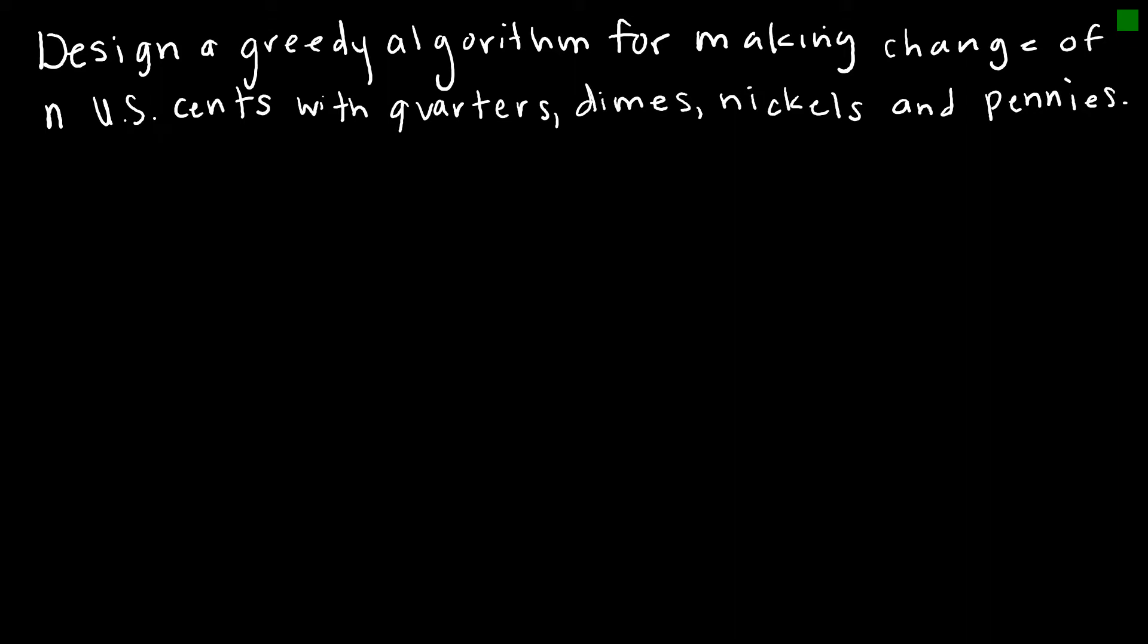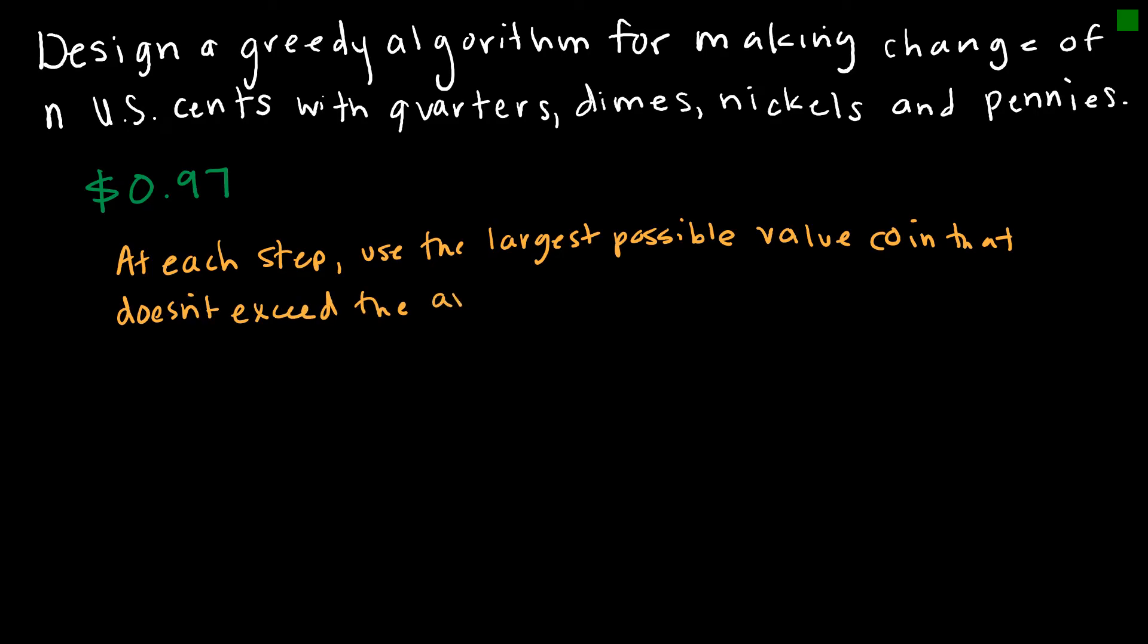Let's take a look at making change and how a greedy algorithm might be used in making change. Let's say, for instance, I owe you 97 cents in change. I could give you 97 pennies, and technically, that is your change, but you might hate me because now you have 97 pennies in your pocket. So instead, we might say that at each step, use the largest possible value coin that doesn't exceed the amount of change left.